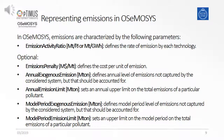When representing emissions in OSeMOSYS, there are several parameters which we have to use. A key parameter is the emission activity ratio, which defines the rate of emissions by each technology. Remember that we consider imports or natural resources also as a technology. Optional parameters are: emissions penalty, which defines costs per unit of emission; annual exogenous emissions, which are emissions not captured by the system but that should be accounted for; and the annual emission limit, which is an upper limit to constrain emissions. These limits can be set for an entire year or for a model period.